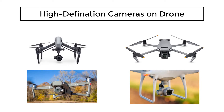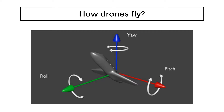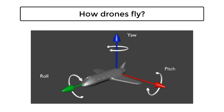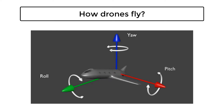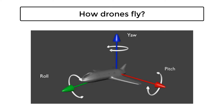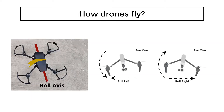Let's understand how drones fly and move in different directions. There are majorly four important locomotion controls of the drone. The first one is roll, which moves the drone sideways — in the left or right direction.